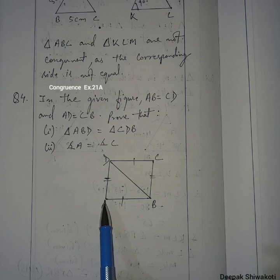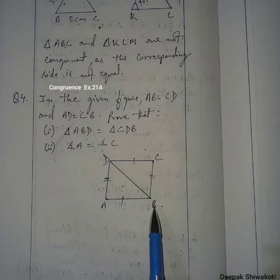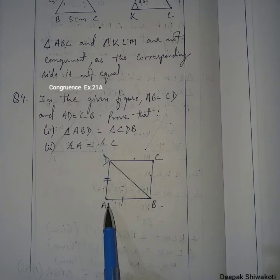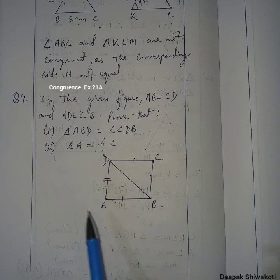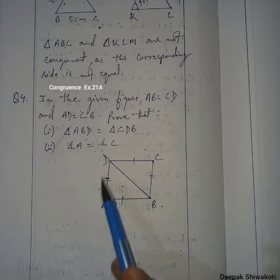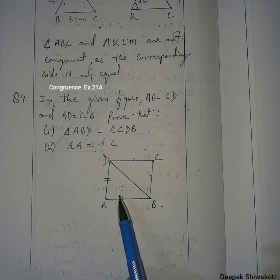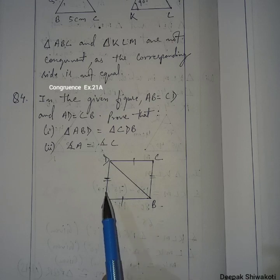We have to prove that triangle ABD and triangle CDB are equal. We also have to show that angle A and angle C are equal. To prove these two things, we need to show that these two triangles are congruent by any one of the congruency conditions.